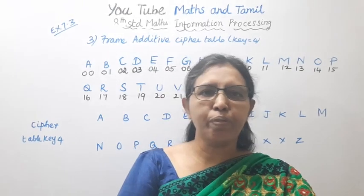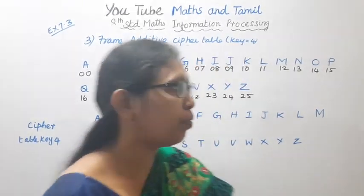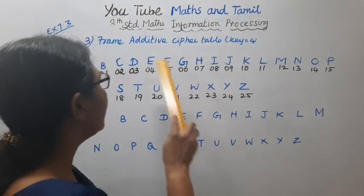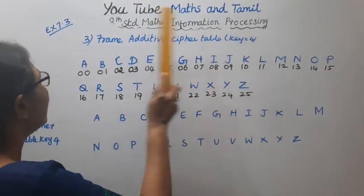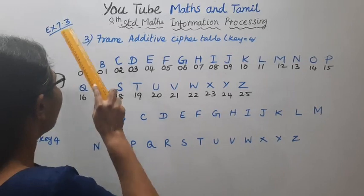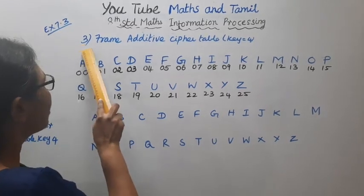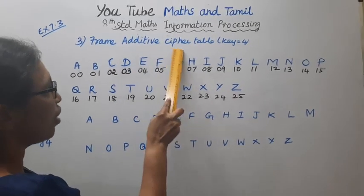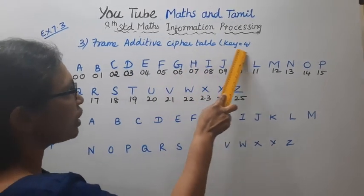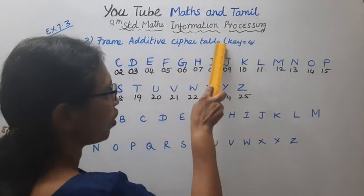Hello students, welcome to Max and Tamil channel. H-Tenamax Information Processing, Exercise 7.3, Third Sum. Additive Cipher Table, Key 4.